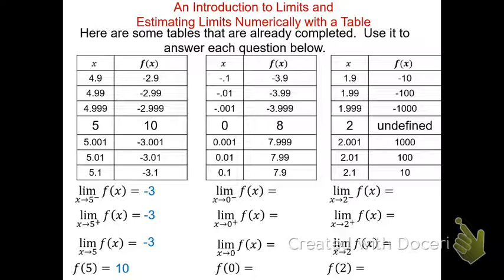For the second table, as x approaches 0 from the left, f(x) goes from −3.9 to −3.99 to −3.999, approaching −4. From the right, it goes from 7.9 to 7.99 to 7.999, approaching 8. Because the left-side limit (−4) does not match the right-side limit (8), the limit does not exist — often abbreviated DNE. The value f(0) is 8.